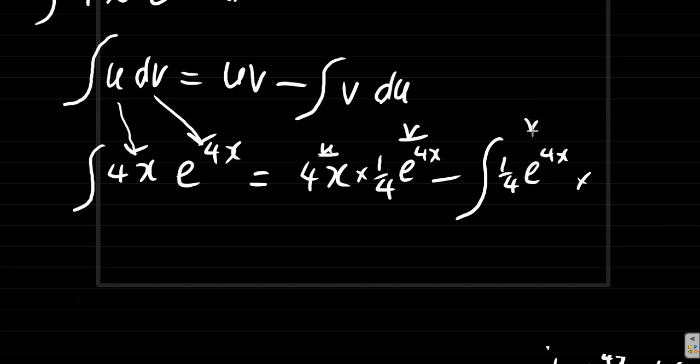du: remember u is 4x and we want to move to this point where we have du. To go from u to du we have to differentiate. What do you get when you differentiate 4x? You get 4.